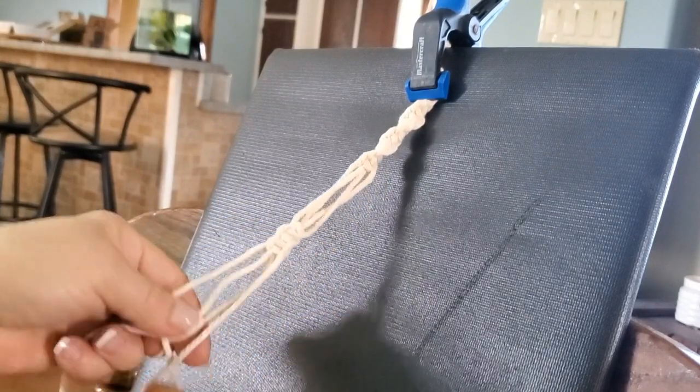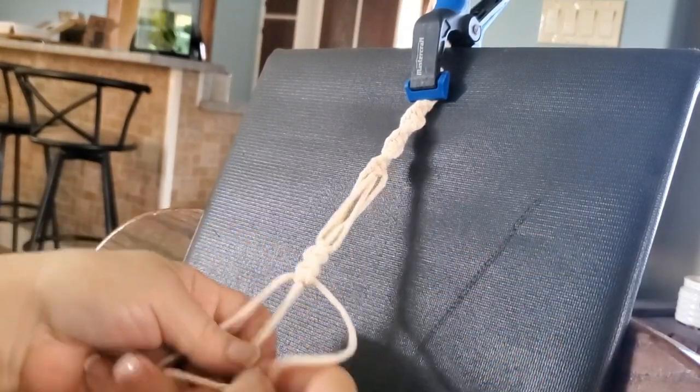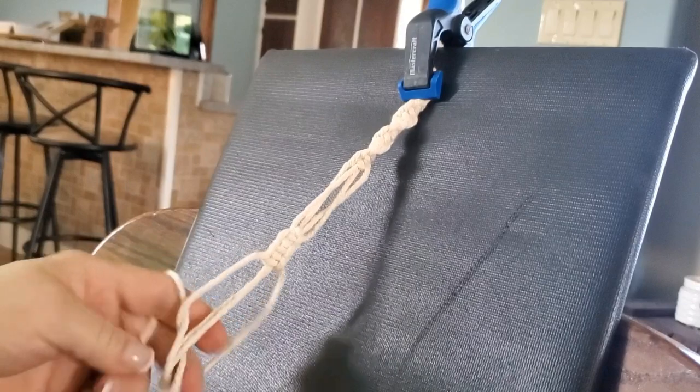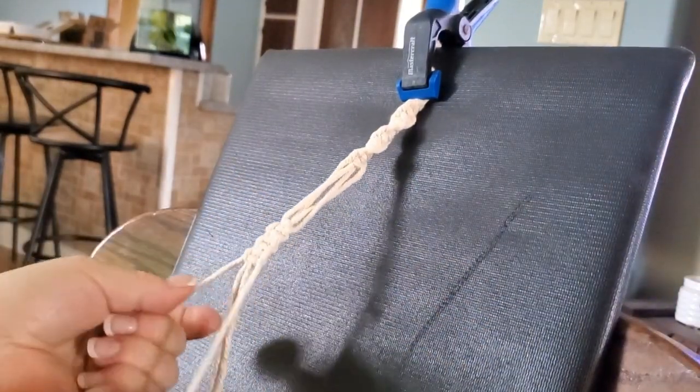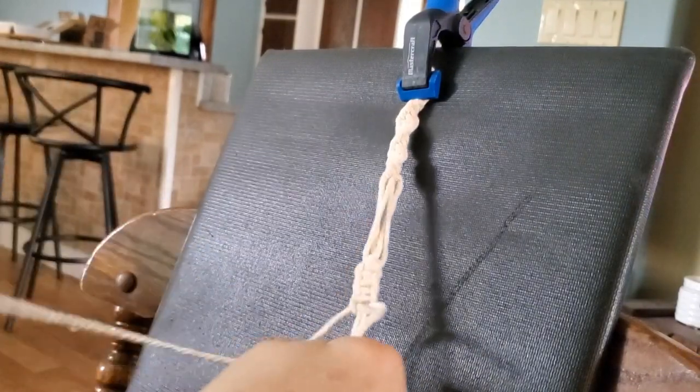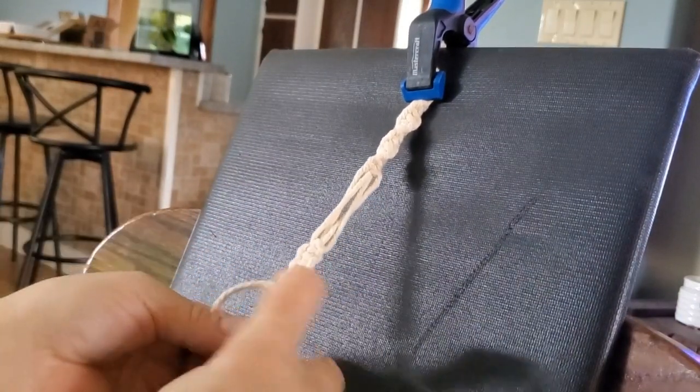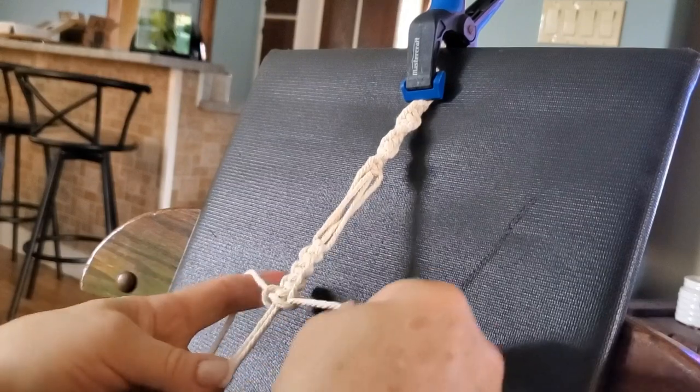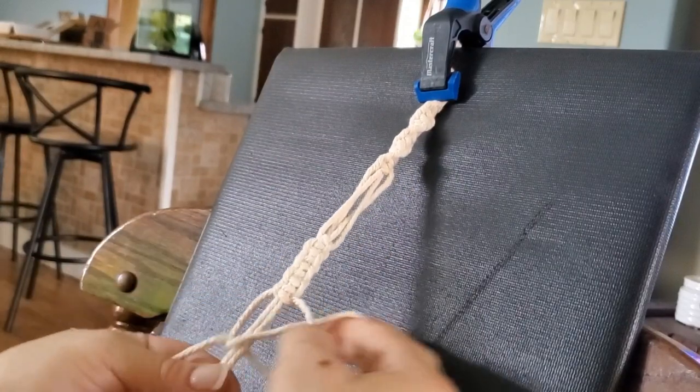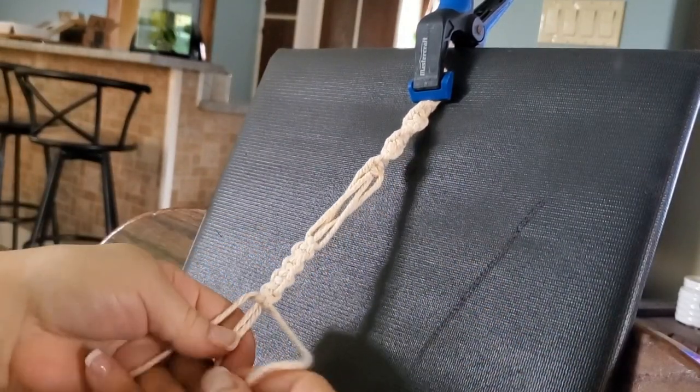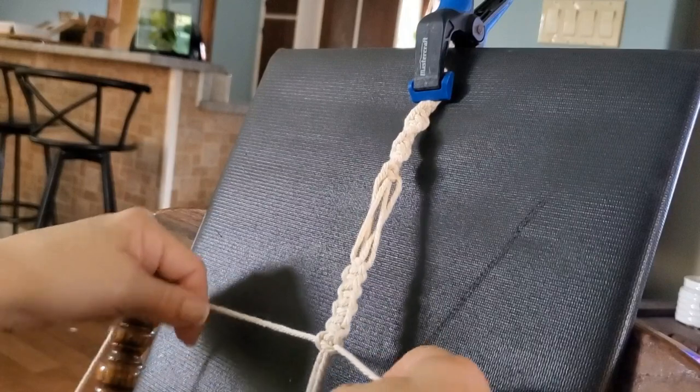Now, if you do notice that you made a mistake and did two on the right side or two on the left side, eventually it will show up in your work if you look at it. But nobody else will notice. But the good thing about working with cords, it's no trouble pulling them back and redoing them. Just takes a little time. Believe me, I have done that many, many times. So we'll continue in this way until the square knot section is the same length as the twisted knot section, which is about four inches.